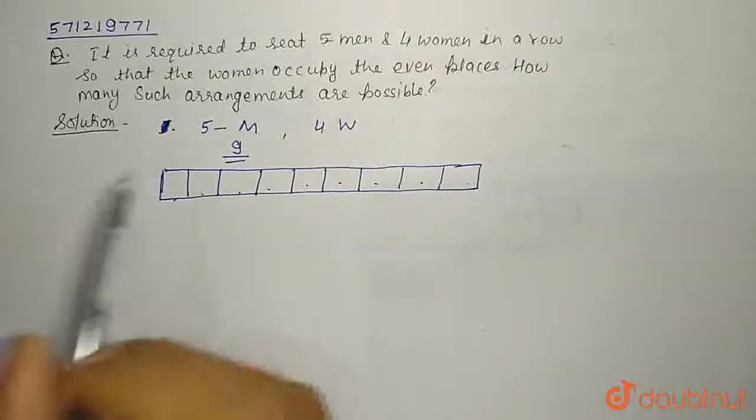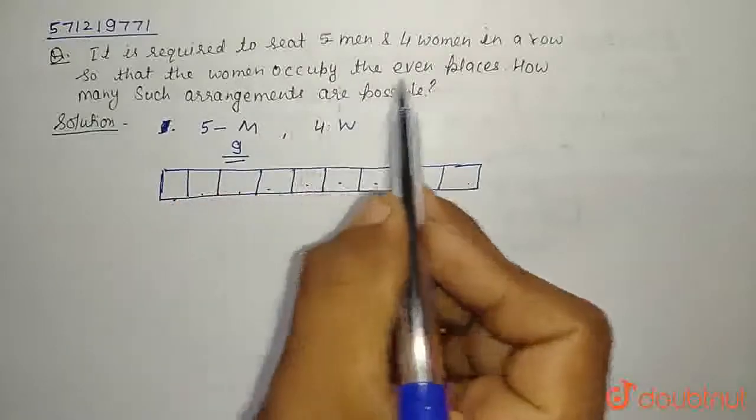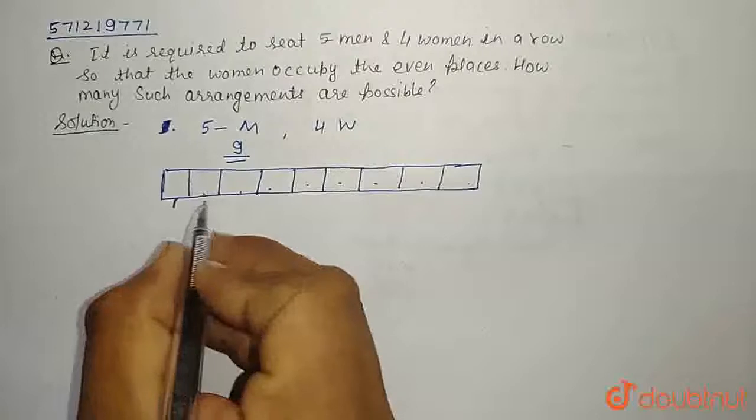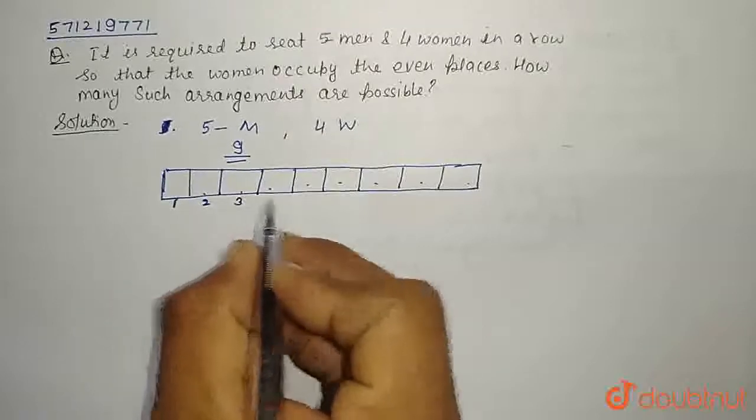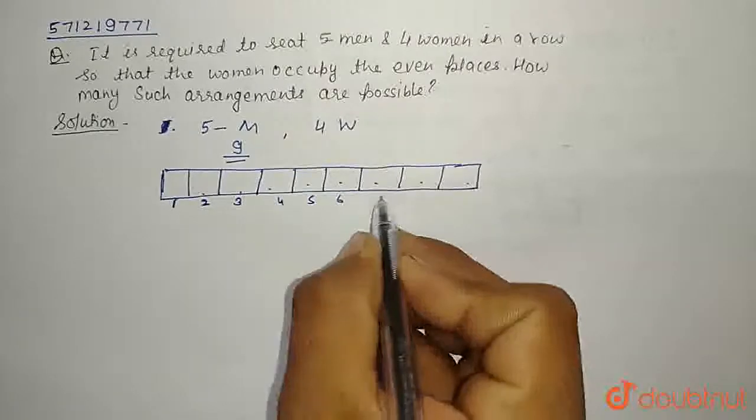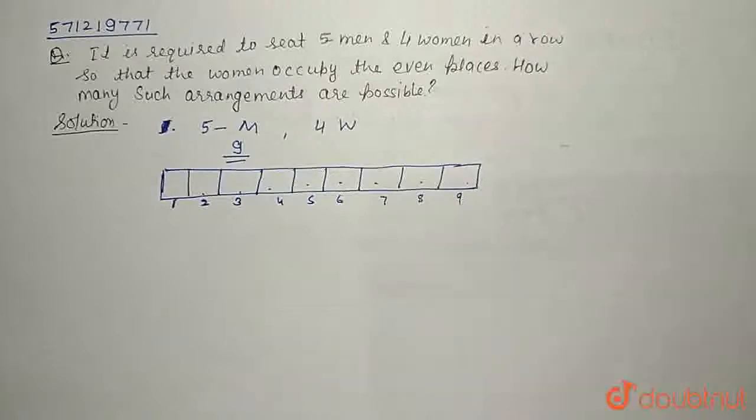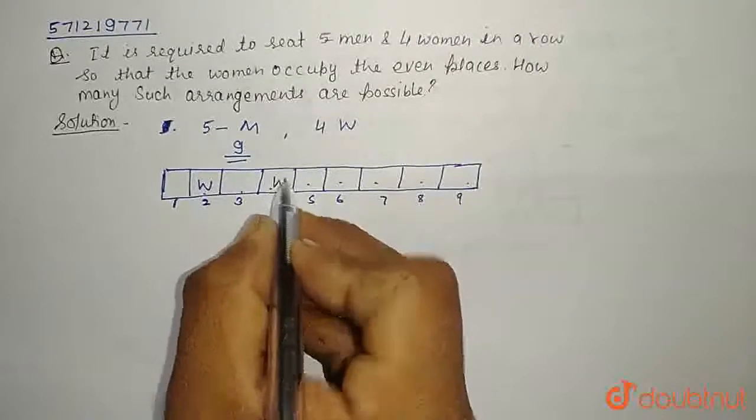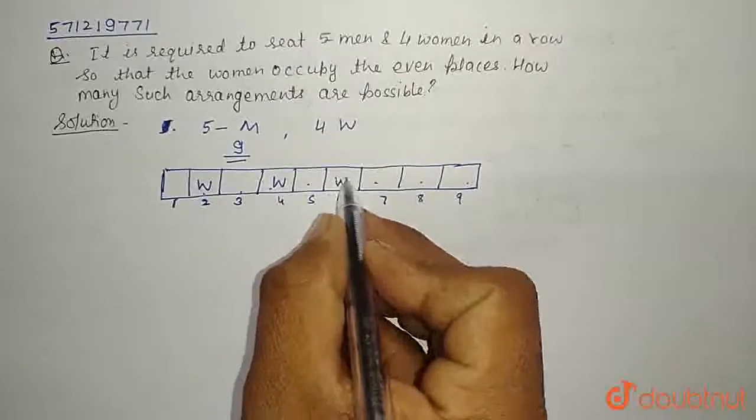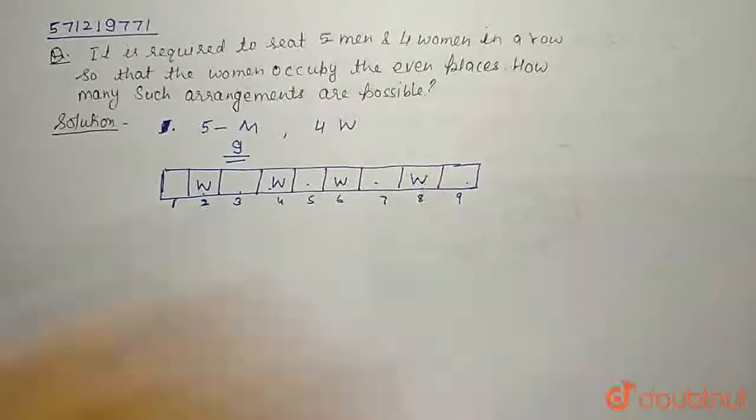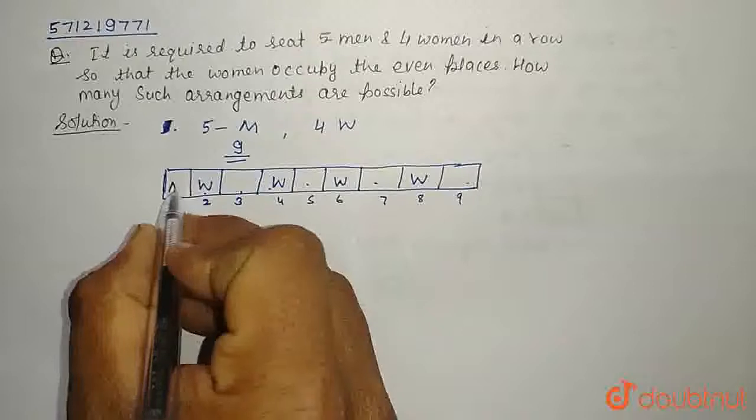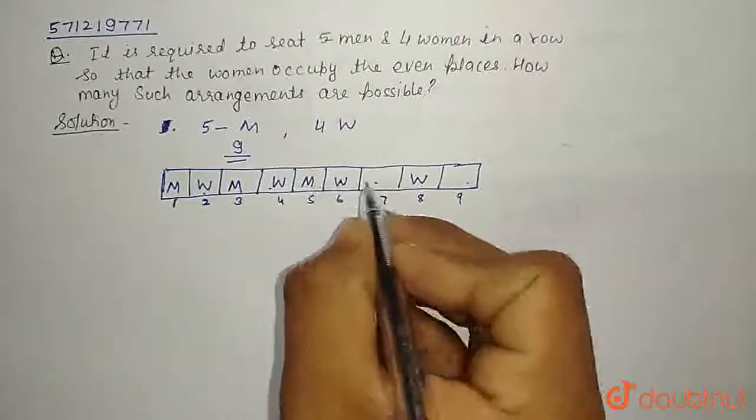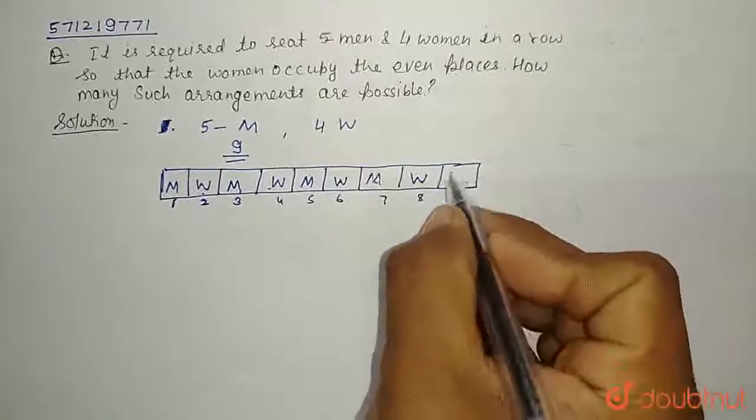We need to arrange them in such a way in which women occupy the even places. So women can occupy the 2nd, 4th, 6th, 8th place and men can occupy 1st, 3rd, 5th, 7th and 9th place.